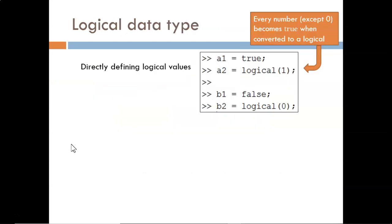We can directly define logical data. One method is to assign the word true or false to a variable, as seen here for a1 and b1. We could also use a built-in function called logical to convert from numeric data to logical data. The number 0 would be converted to logical false, as seen with b2.